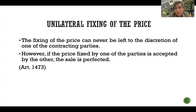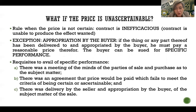Remember this rule: the fixing of the price is not a unilateral act and it cannot be left to the discretion of one of the contracting parties. But if the fixing of the price by one of the parties is accepted by the other, then the sale is considered as already perfected. That's the rule in Article 1473.